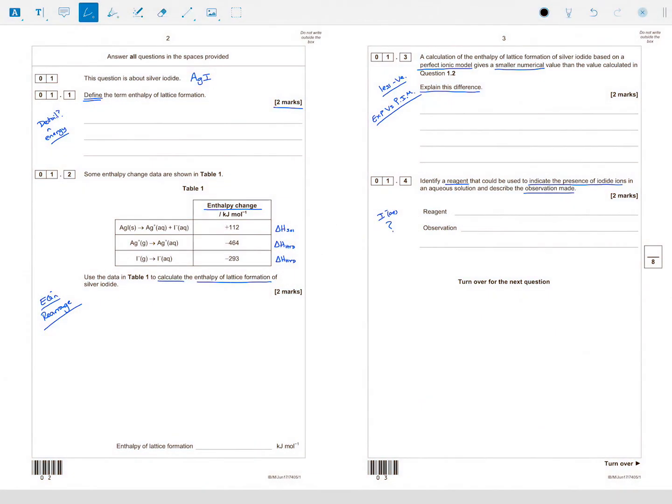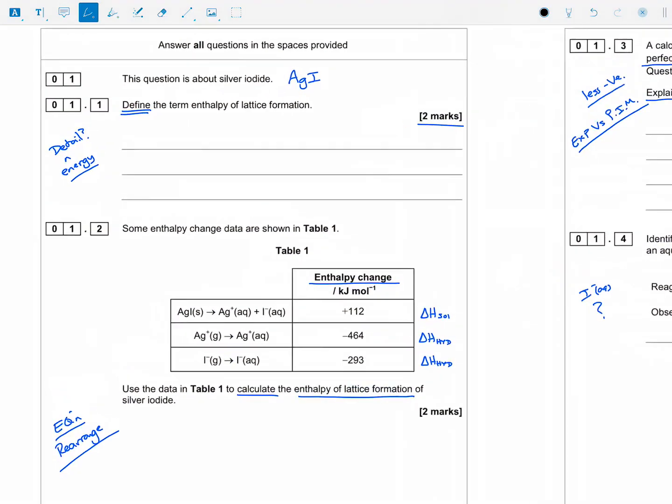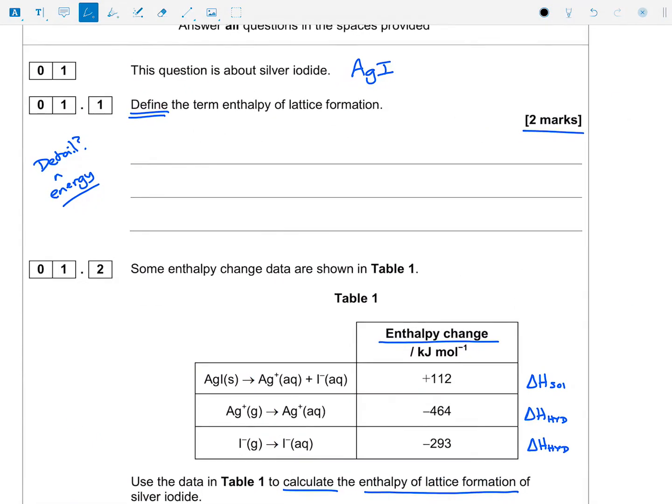Having a crack at this question 1 here. The question is about silver iodide, and the first question is, well nothing to do with silver iodide specifically, but define the term enthalpy of lattice formation.